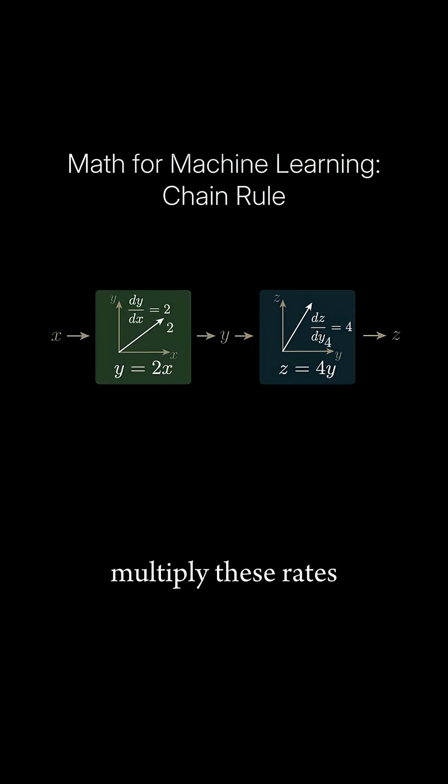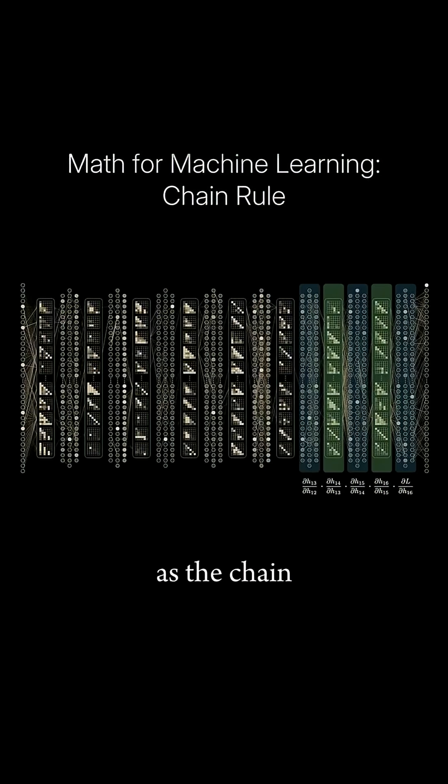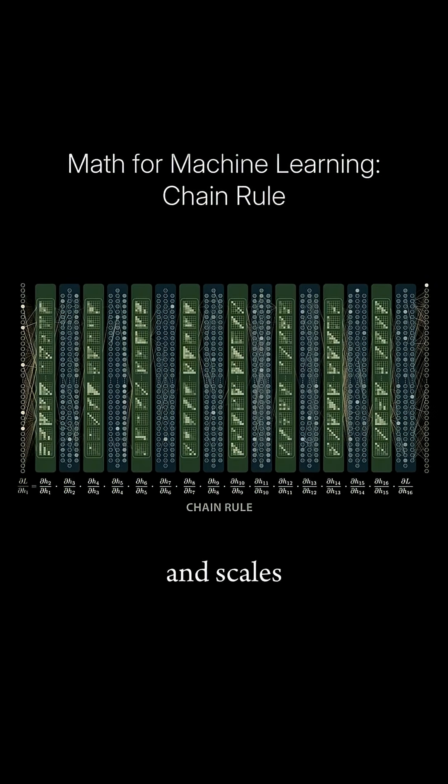We can then multiply these rates of change together to get our overall rate of change. So 2 times 4 equals 8, or dy dx times dz dy equals dz dx. This is known as the chain rule in calculus, and scales much more cleanly to models with many layers like llama.